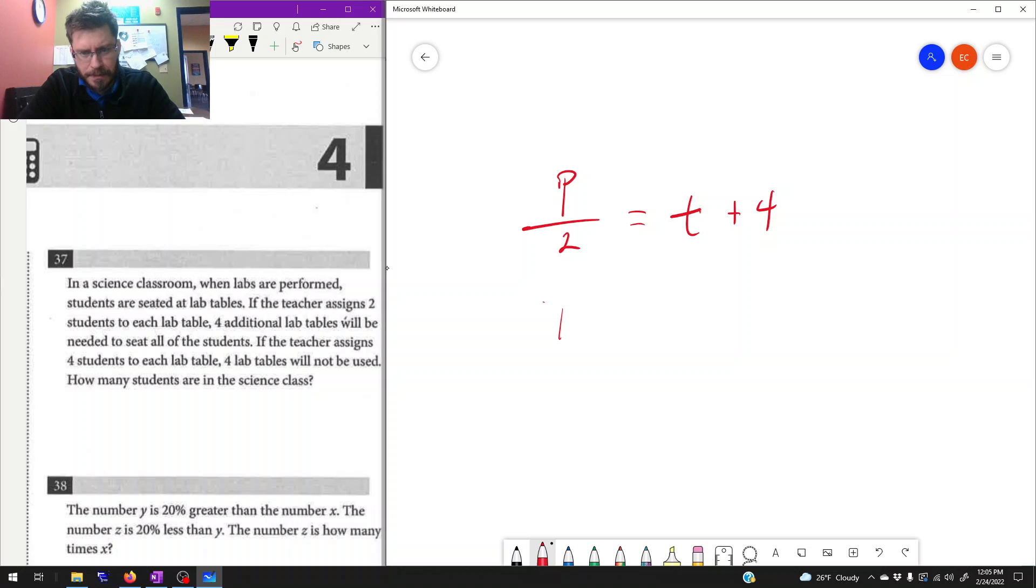If I take that same population, the number of students in the room, if the teacher assigns four students to each table, we take that population divided by four, that's going to be equal to the number of tables in the room minus four this time. Four tables will not be used.